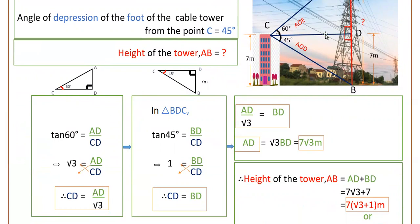Now in triangle BDC, tan 45 degrees equals opposite side by adjacent side, that is BD by CD. Tan 45 is 1, so 1 equals BD by CD. Therefore CD equals BD. So we have CD equals AD divided by root 3 from triangle ADC, and CD equals BD from triangle BDC.